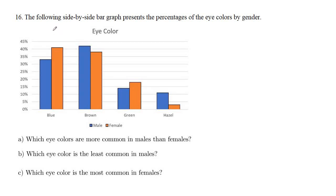In problem 16 we've got some side-by-side bar graphs looking at the percentages of different eye colors by gender. They ask us which eye colors are more common in males than females. The males are the blue bars and the females are the orange bars. We want to know where the blue bars are higher than the orange — that would be for brown and hazel.